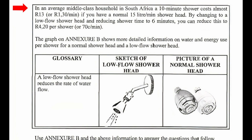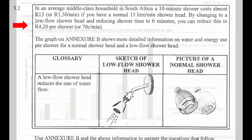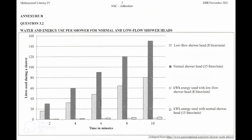Question 3.2: In an average middle class household in South Africa, a 10-minute shower costs almost R13, or R1.30 per minute, if you have a normal 15-litre per minute shower head. By changing to a low flow shower head and reducing the shower time to 6 minutes, you can reduce this to R4.20 per shower, or 70 cents per minute.